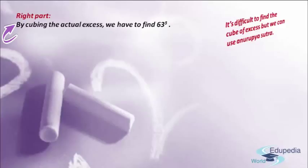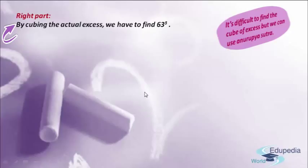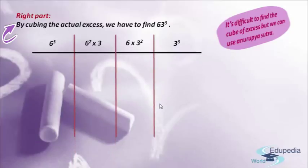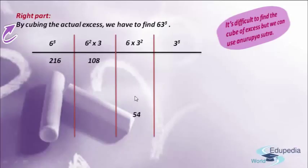At first, we have to write the two digits 6 and 3 as follows: 6 cube, 6 square into 3, 6 into 3 square, and 3 cube. After writing all these, let me place some horizontal and vertical bars. Now I am going to write all the answers below the horizontal bar in each part. So: 6 cube = 216, 6 square into 3 = 36 into 3 = 108, 6 into 3 square = 6 into 9 = 54, and 3 cube = 27.